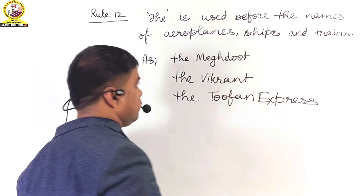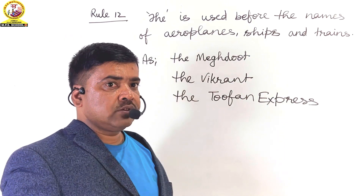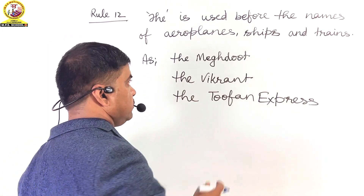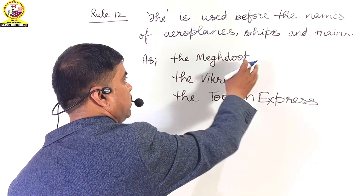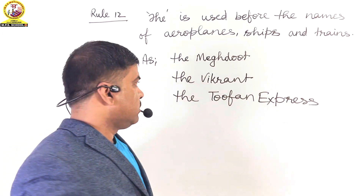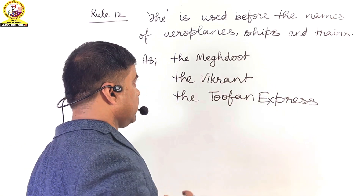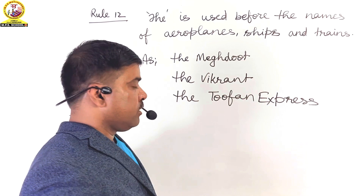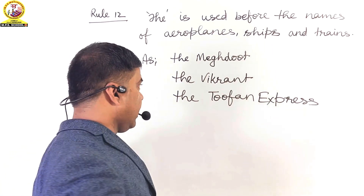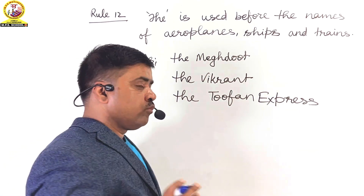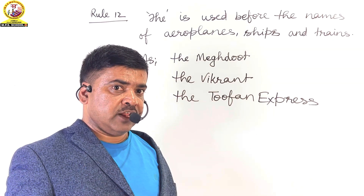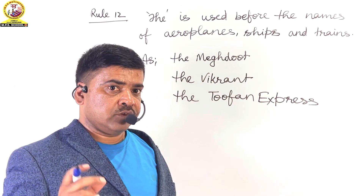For example, the Meghdoot is the name of an aeroplane, the Vikrant is the name of a ship, and the Tufan Express is the name of a train.